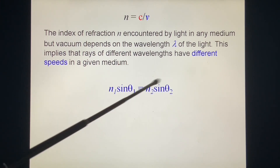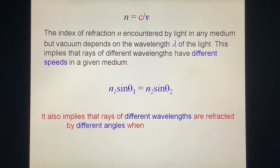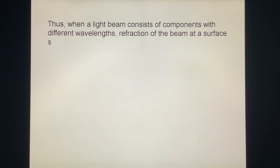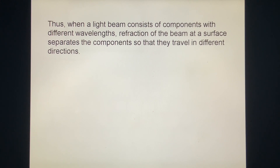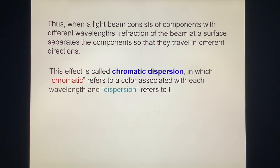Since n differs with wavelength, the angle of refraction also differs. It implies that rays of different wavelengths are refracted by different angles when crossing a surface. When a light beam consists of components with different wavelengths, refraction at a surface separates the components so that they travel in different directions. This effect is called chromatic dispersion — chromatic refers to the color associated with each wavelength, and dispersion refers to the separation of the wavelengths or colors.